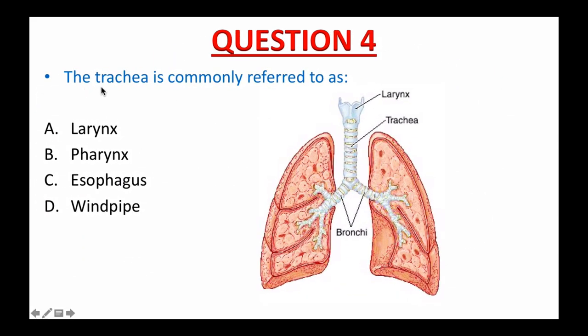Question number four: The trachea is commonly referred to as — A. Larynx, B. Pharynx, C. Esophagus, or D. Windpipe. If you picked D — windpipe — that's great, you are learning fast. The trachea, also called the windpipe, begins at the larynx and splits into bronchi — the left and the right primary bronchi.